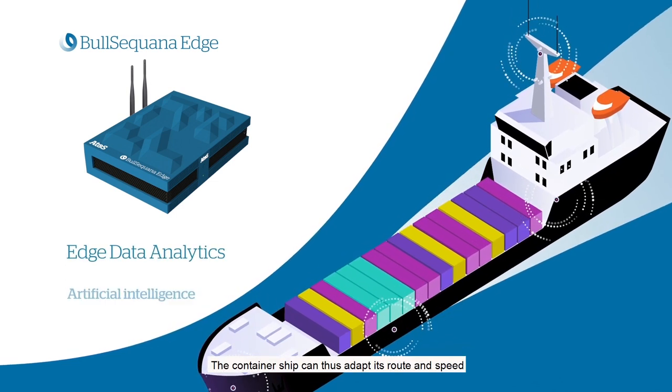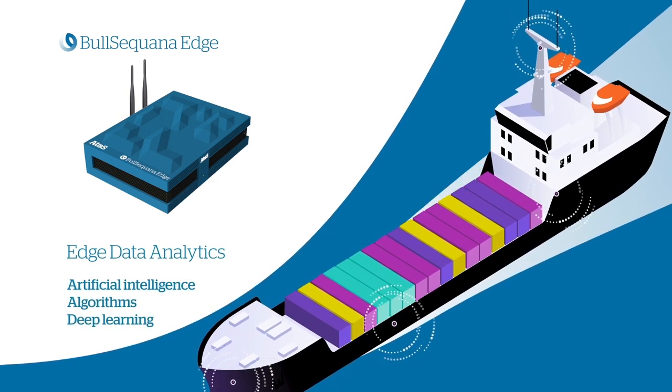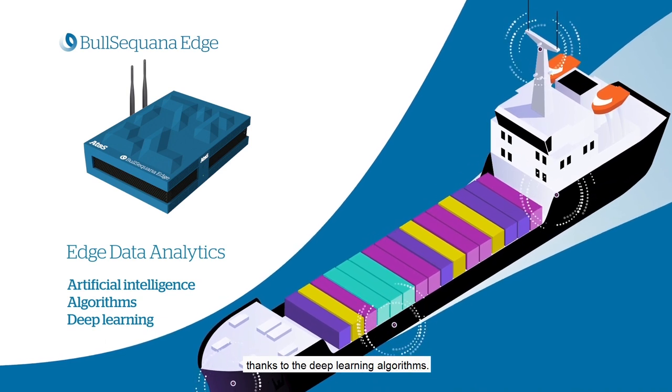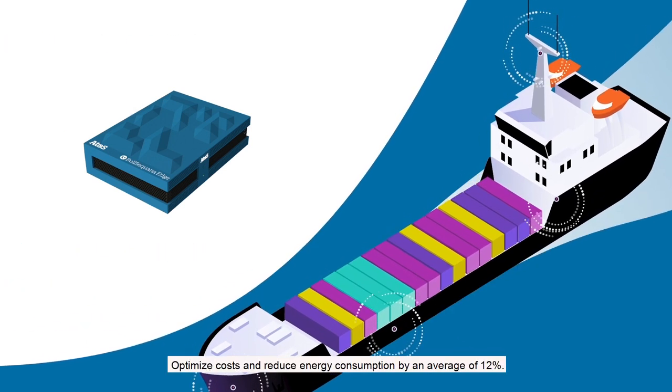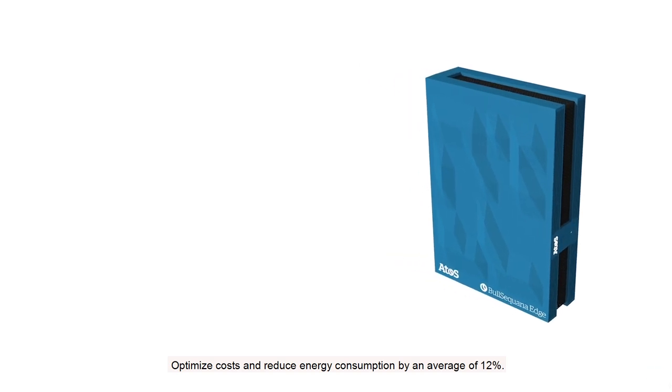The container ship can thus adapt its route and speed thanks to deep learning algorithms, optimize costs, and reduce energy consumption by an average of 12%. A solution that is completely self-contained on your container ships,